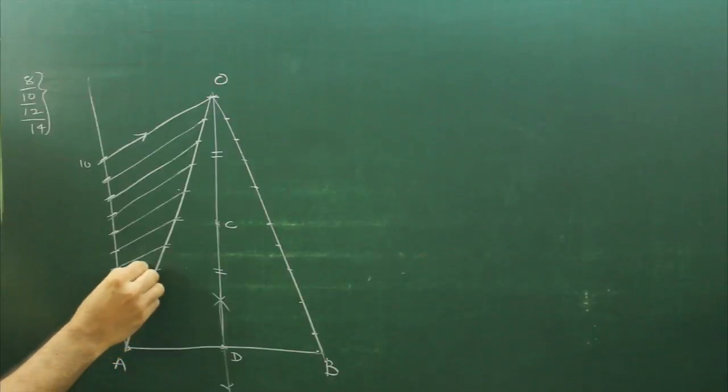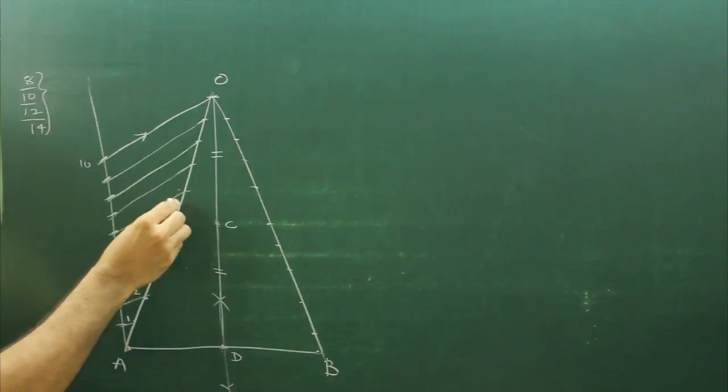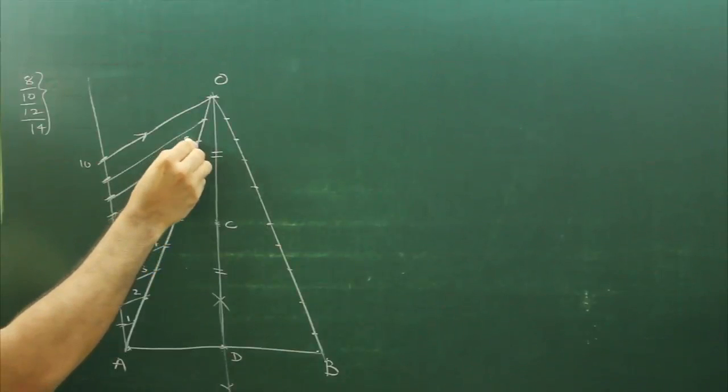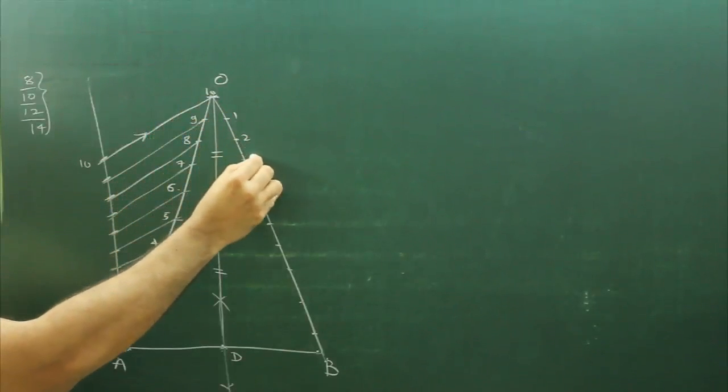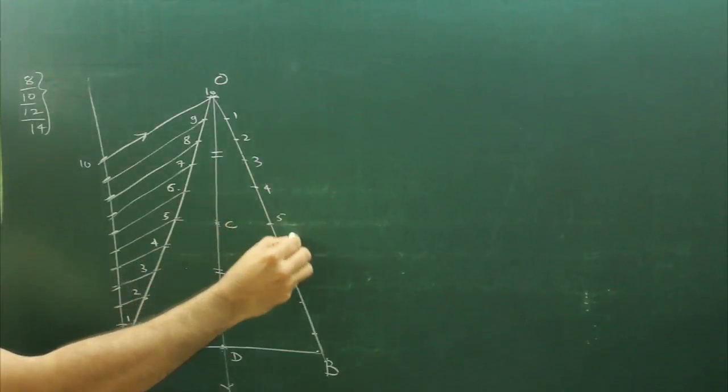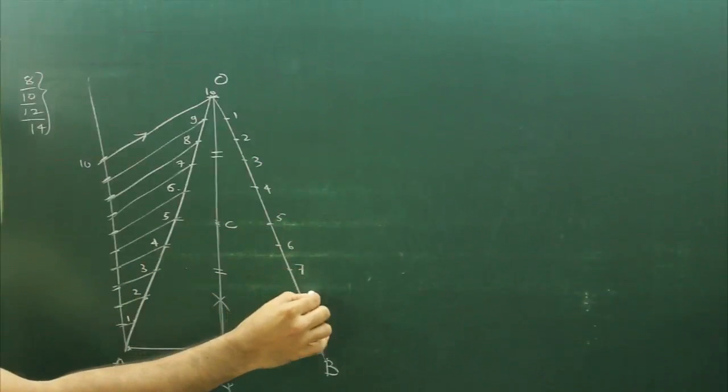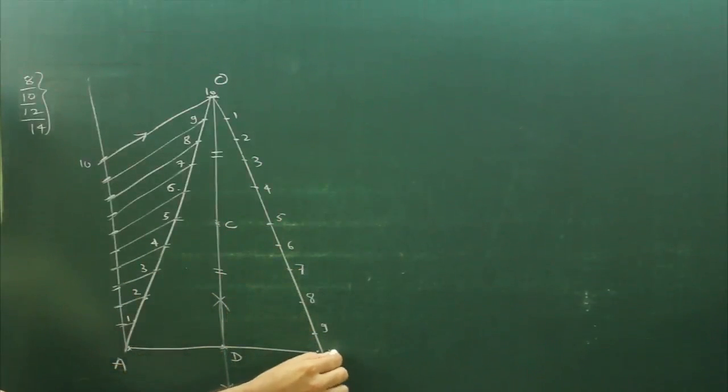1, 2, 3, 4, 5, 6, 7, 8, 9, 10. Again 1, 2, 3, 4, 5, 6, 7, 8, 9, 10. Again 1, 2, 3, 4, 5, 6, 7, 8, 9, 10.